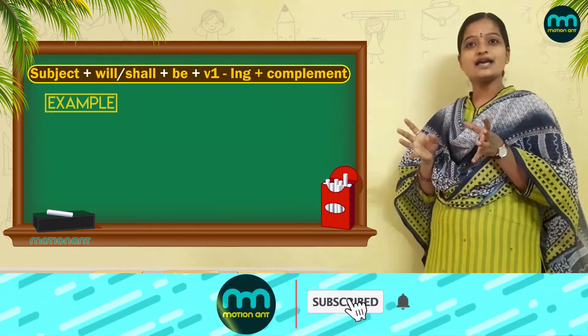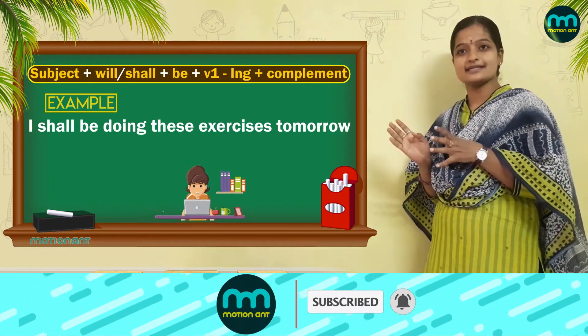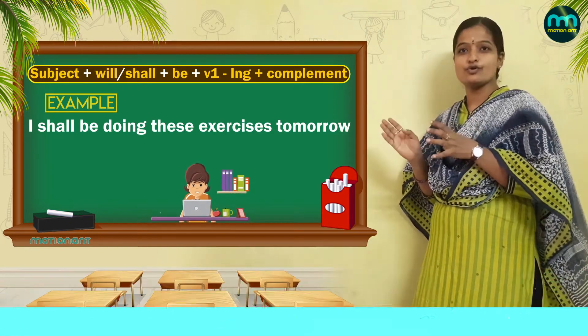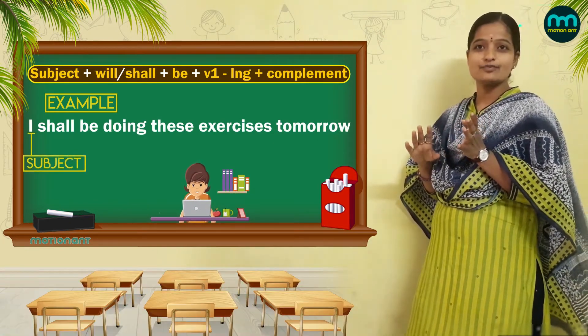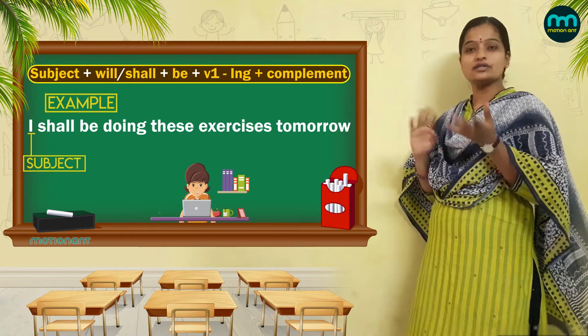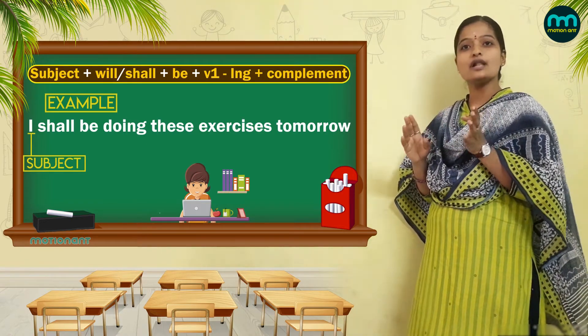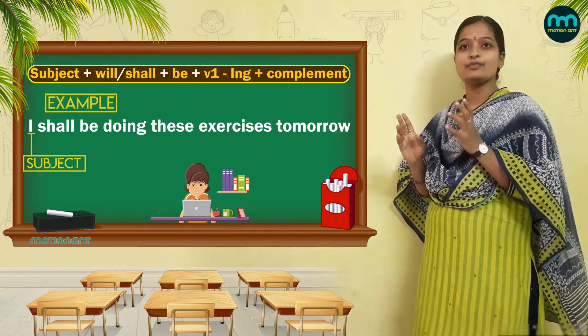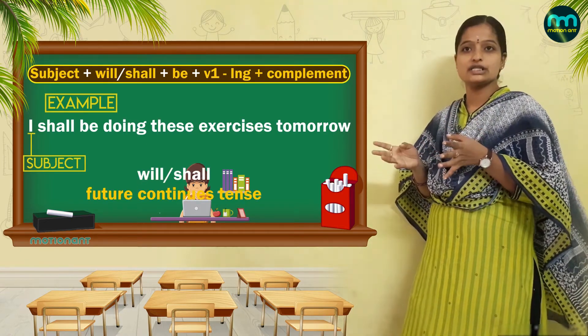Example: I shall be doing these exercises tomorrow. Here, I is the subject. As we learned earlier, we are using will or shall because it is a future continuous tense.